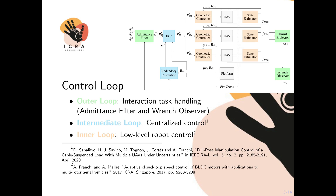The intermediate control loop is a centralized controller that generates the velocity reference for each vehicle given the desired platform pose. Finally, each drone has its own position controller which operates in the inner control loop and determines what the vehicle should do based on the robot's planned trajectory.